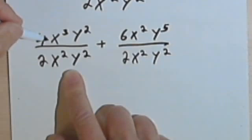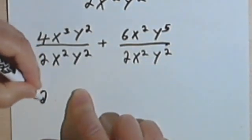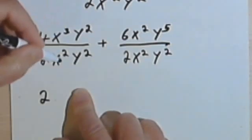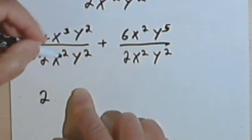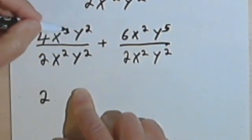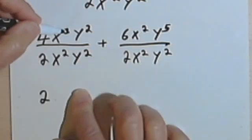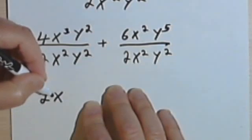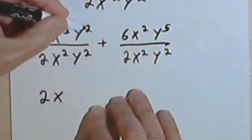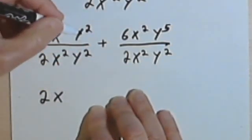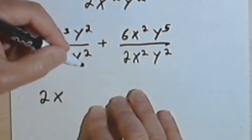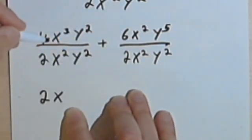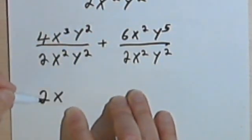So taking the first fraction, I've got 4 divided by 2, which is just 2. x³ over x², I'm going to subtract this 2 from this 3, so that's just going to give me x. And y² divided by y² is just 1, these two will basically cancel. So this whole fraction, this first fraction, simplifies down to 2x.